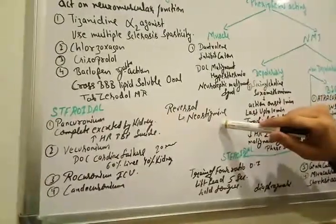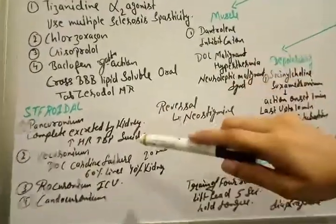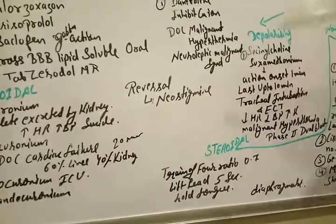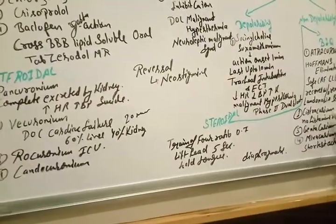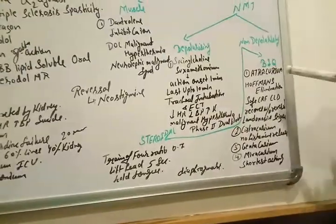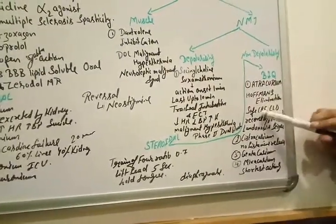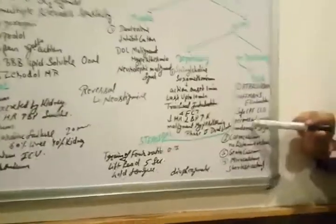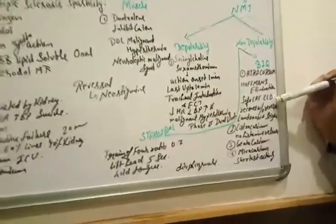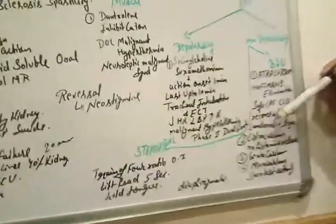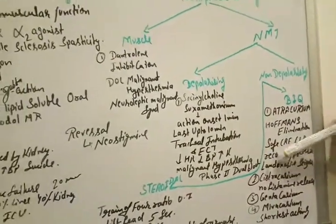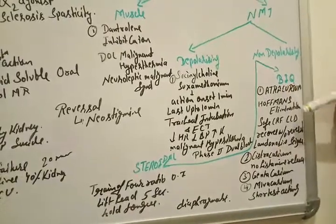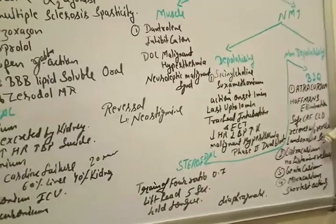But the neostigmine is a good reversal agent, we can use glycopyrrolate with it or we can use atropine because sometimes these muscle relaxants cause bradycardia. That's why we can use atropine and glycopyrrolate. And cistracurium, about atracurium it's Hoffman's elimination safe in renal and liver diseases. It can be reversed without reversal agent and laudanosine.